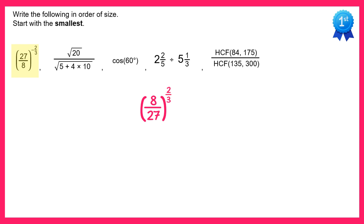When we have a power of 2 thirds this just means do the cube root and then square it. So this is the same as the cube root of 8, all squared, divided by the cube root of 27, all squared.